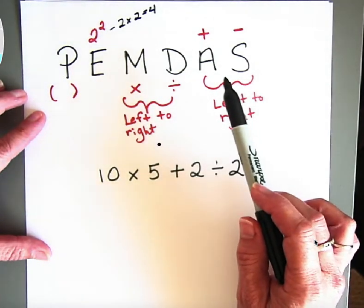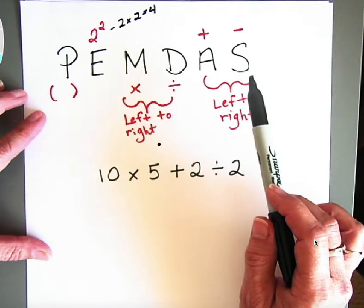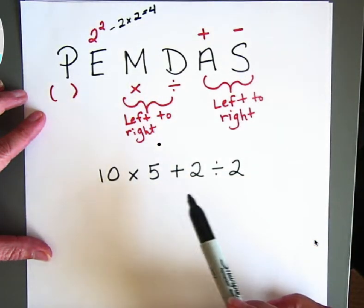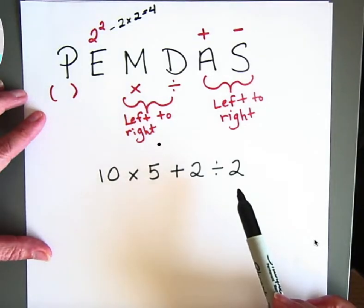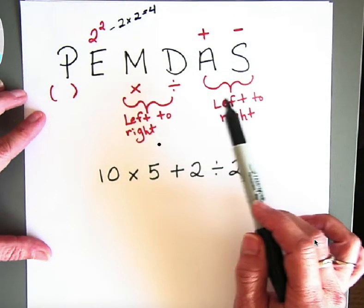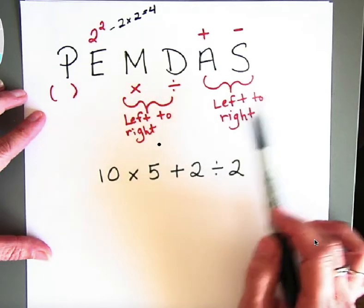And that's the same for addition and subtraction. So if subtraction were to come in an expression before addition, you would do subtraction first. So they're like best friends again, and you just follow them from left to right.